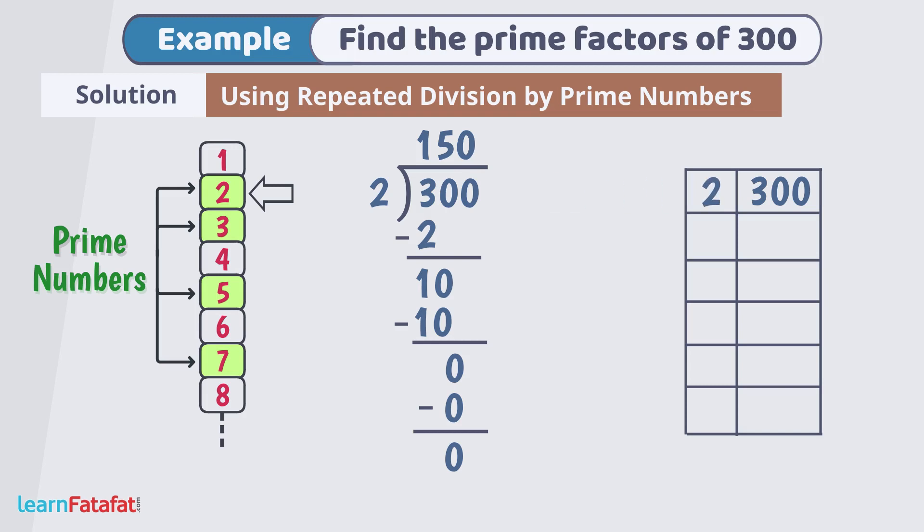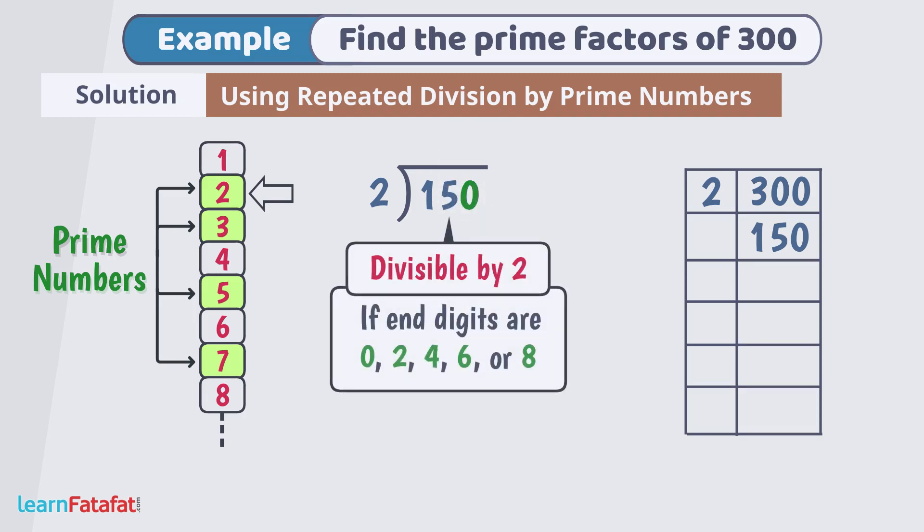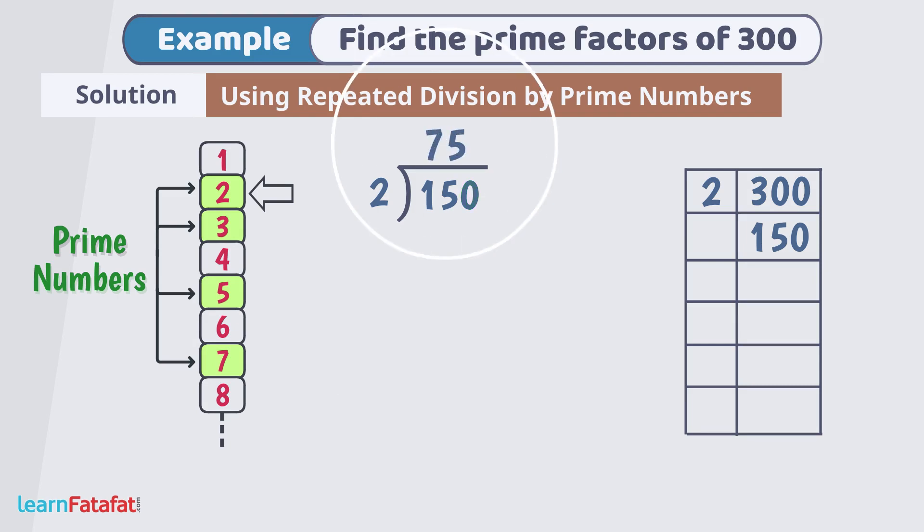Write 2 here and quotient 150 here. Again, 150 also has last digit 0, so it is also divisible by 2. On division, it produces quotient 75. Write 2 here and 75 here.